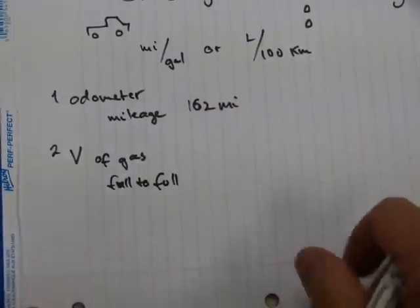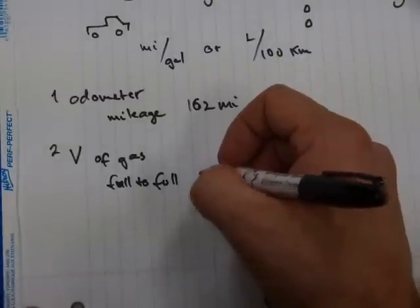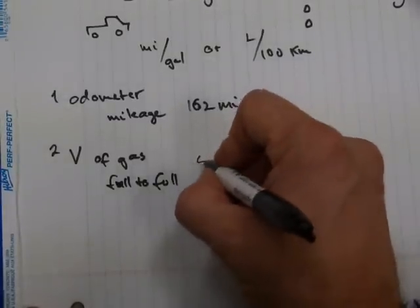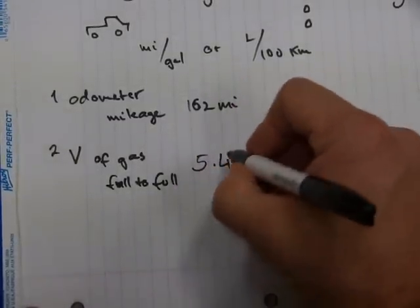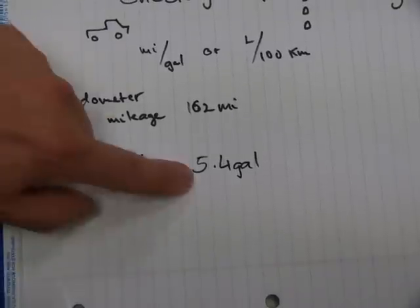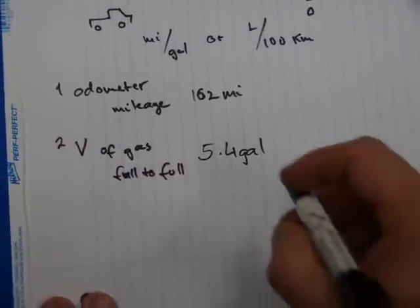And when you do so, you can see on the gas station's counter that maybe you had 5.4 gallons of fuel consumed by the vehicle over the same 162 mile distance.